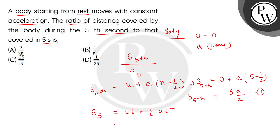We will put the value here. U we have as 0, plus half a multiplied by 5 square, which means 25. So we will get S_5 value.